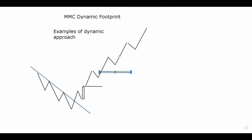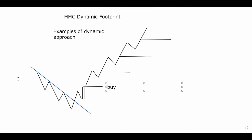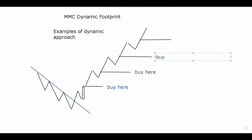Waiting for the momentum candle helps minimize your losses, because sometimes when the market breaks out and gives you a divergence it still drops to the downside with no momentum for a buy - that's a fake breakout. Most of the time, fake breakouts do not have momentum candlesticks. When I say momentum, I mean the signs showing us the market will go to the upside strongly.